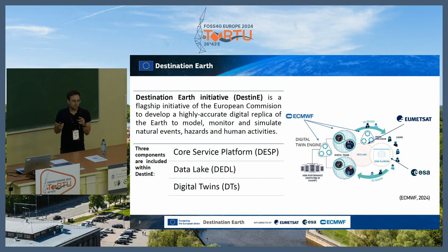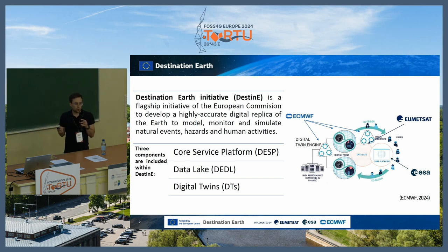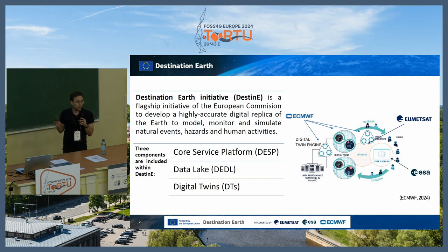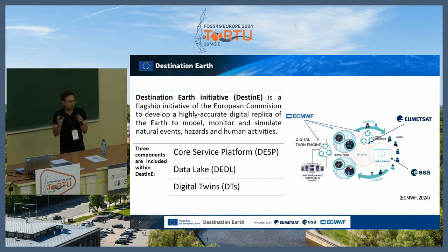Each of these institutions is responsible for implementing one key component of Destination Earth. ECMWF is responsible for developing the digital twin engines — the platform and services which produce digital twin data. The Core Service Platform, so-called DESP, is developed by ESA and is the point where the user journey begins. Finally, the Destination Earth Data Lake is developed by EUMETSAT, serving as a backend connection between digital twins and the core service platform.